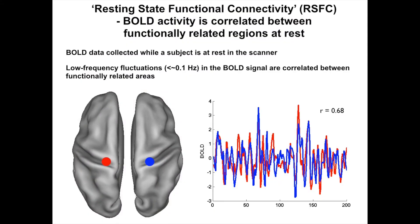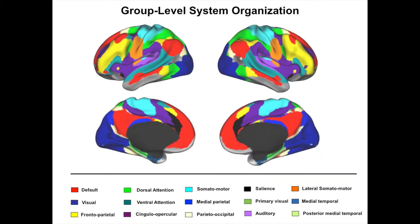Many investigators have begun using resting state functional MRI to interrogate the functional organization of the human brain. This technique measures patterns of correlation between low frequency fluctuations in the BOLD signal while a subject lies at rest in an MRI scanner. This approach has been highly successful at identifying functional systems and basic organizational properties of the brain, and presents significant potential for in vivo understanding of both normal and pathological physiology.